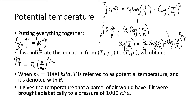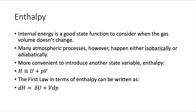For example, if you have a parcel near the surface and one at 10 kilometers, you cannot directly compare their temperatures because they're too different. But by looking at their potential temperature, it's the same as bringing both parcels to the same level and then comparing them.